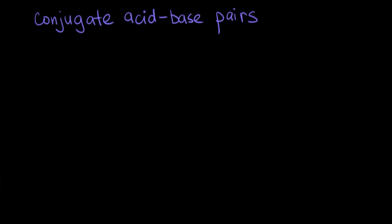In this video, we're going to be talking about conjugate acid-base pairs. We're going to introduce the idea of a conjugate acid-base pair using an example reaction. The example reaction is between hydrogen fluoride, or HF, and water.